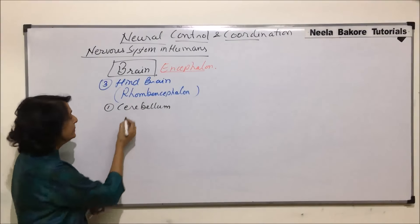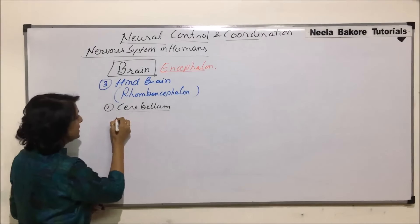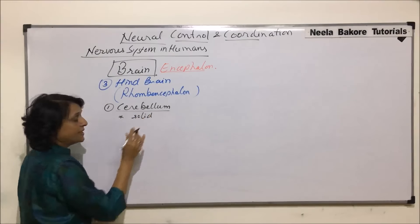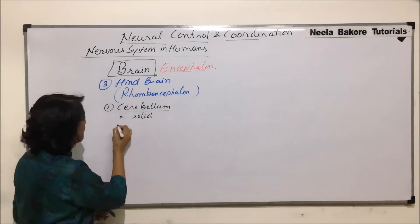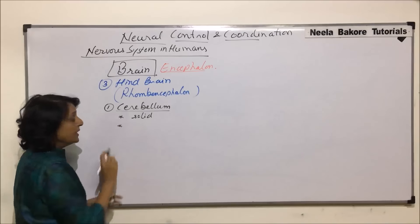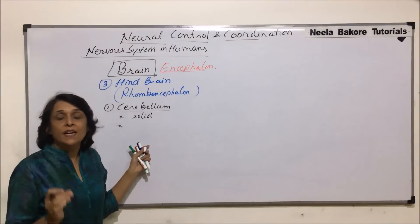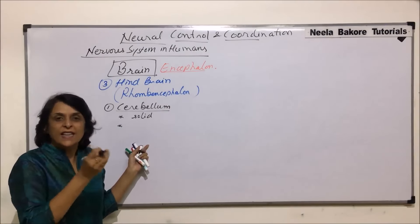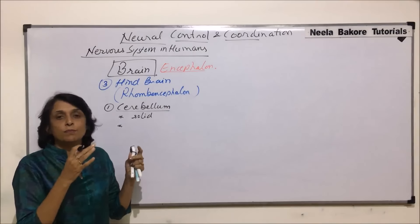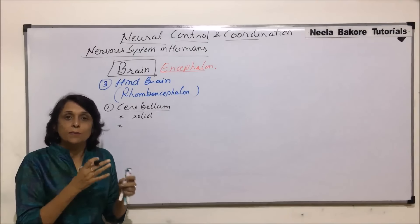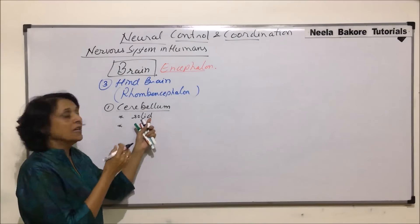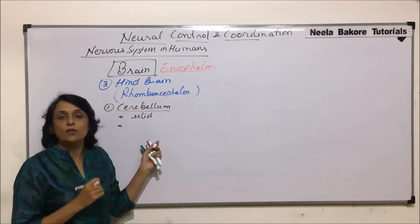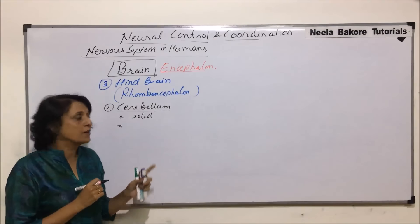Cerebellum is solid — that means there are no cavities here. It is the second largest part of the brain, after the cerebrum, that is, the cerebral hemispheres. The cerebellum is distinct and is seen on the posterior side of the brain.